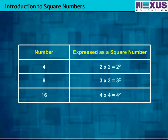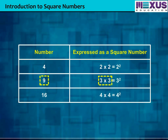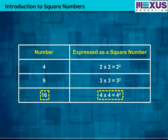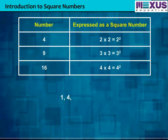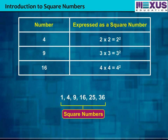Here, 4 can be expressed as 2 into 2, which is equal to 2 square. 9 is expressed as 3 into 3, equal to 3 square. 16 is expressed as 4 into 4, equal to 4 square. So such numbers which can be expressed as the product of a number with itself, like 1, 4, 9, 16, 25, 36, are known as square numbers.